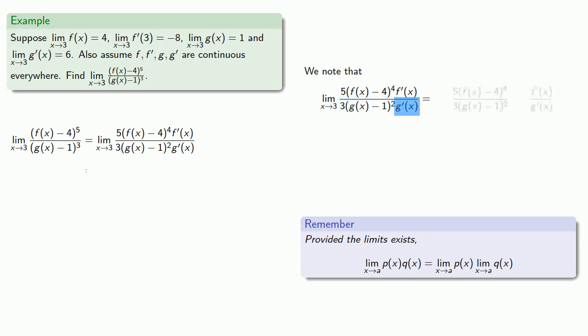So we can rewrite this quotient, and limits all around. Since the limit as x goes to 3 of g'(x) isn't 0, we can find the second limit directly.